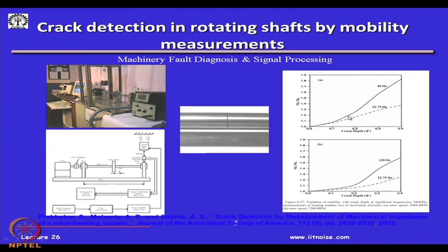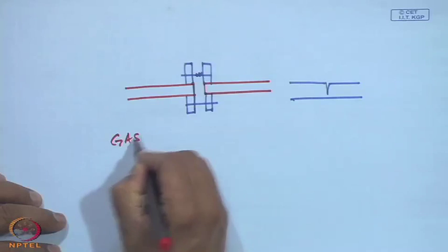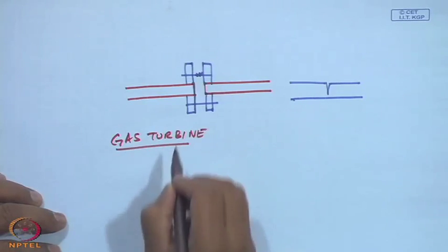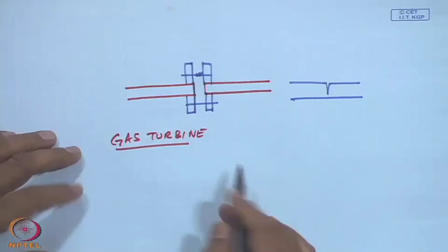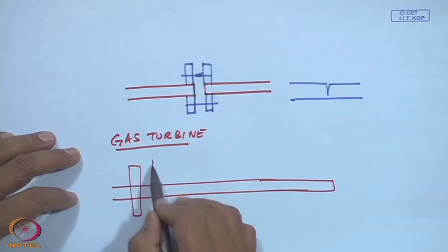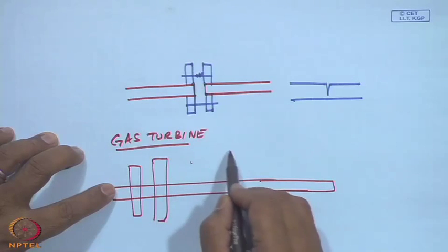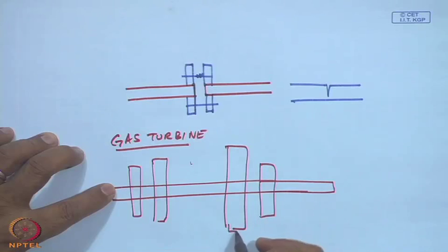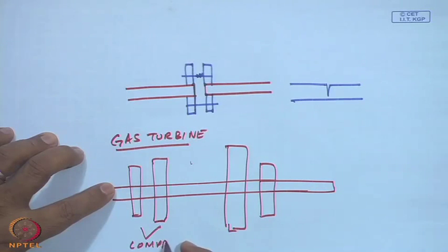For a system like a gas turbine, we want to monitor whether cracks have occurred. A gas turbine has long rotors with sets of compressor blades — low-pressure and high-pressure stages, combustion, and turbine stages with sets of vanes — all of which we need to monitor.